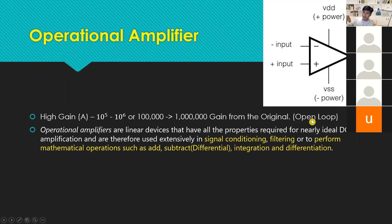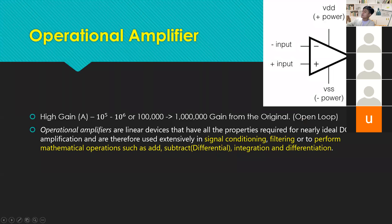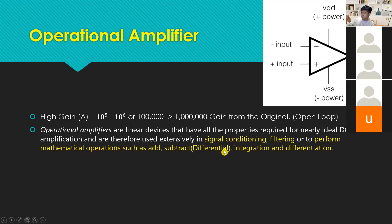This extreme gain is only applicable in an open-loop circuit. In reality, we don't use open-loop because it's too high and uncontrollable — it's hard to maintain. That is why in the real world we only use closed-loop, where the output feeds back to the input. Operational amplifiers are linear devices used extensively in signal conditioning, filtering, or to perform mathematical operations such as adding (summing amplifier), subtracting (differential amplifier), integration, or differentiation.